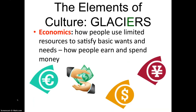Our next box, number six down, is E in GLACIERS, and that stands for Economics. This is how people use limited resources to satisfy their basic wants and needs, and it can also mean how people earn and spend money. You may barter for something — exchange things and say, 'I have this and I want what you have, can we trade?' It can also mean exchanging money for items or services. At the bottom you're seeing a sign for the euro, then a picture of money, and then the sign for yen — all types of money that can be exchanged for a good or service.